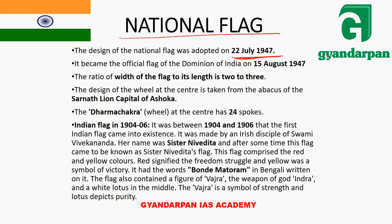The flag's length to width ratio is 2:3. At the center there is a wheel — its design is taken from the Lion Capital of Ashoka at Sarnath — and it is called the Dharma Chakra. This wheel has 24 spokes.